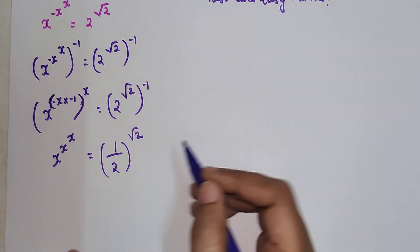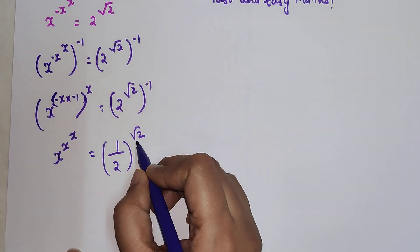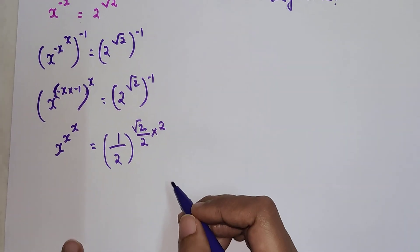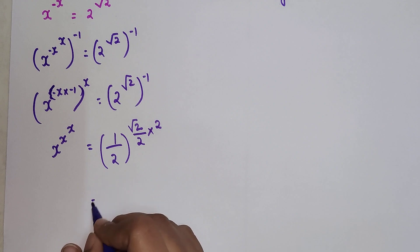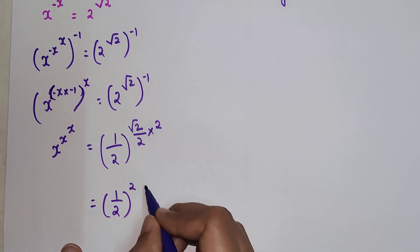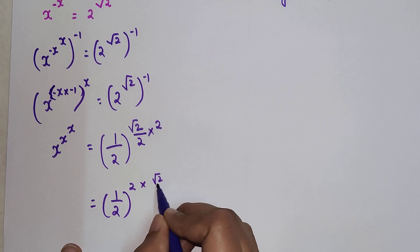Here what I can do is I can multiply and divide by 2 because eventually that will become 1. So I can write this as 1 upon 2 the whole raised to 2 into root 2 upon 2.